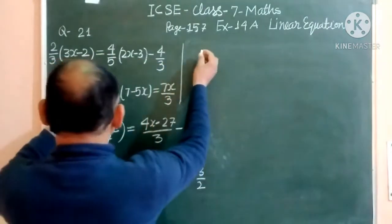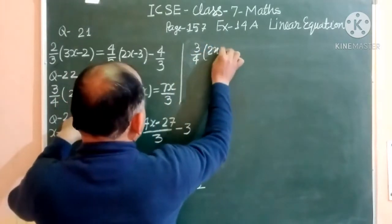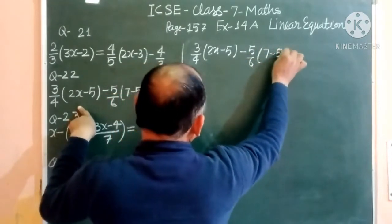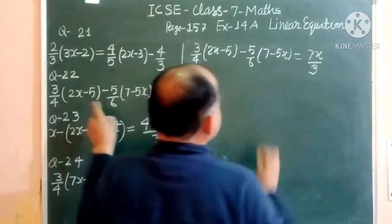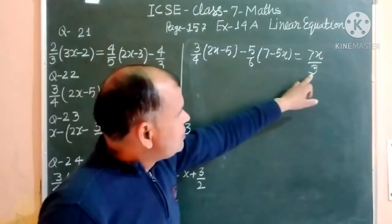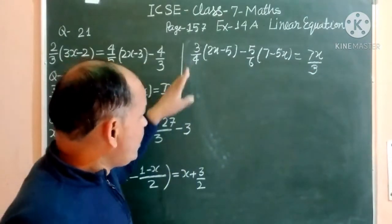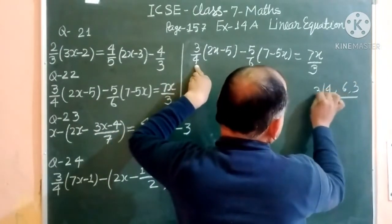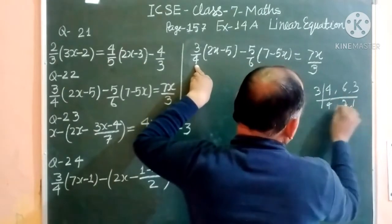Question 22 is: (3/4)(2x - 5) - (5/6)(7 - 5x) = 7x/3. To solve this, we find the LCM of 4, 6 and 3. The LCM of 4, 6 and 3 is 12.